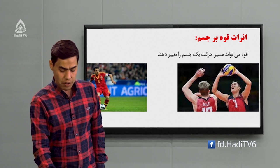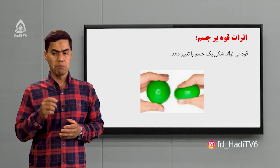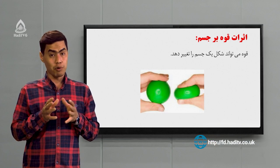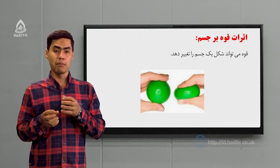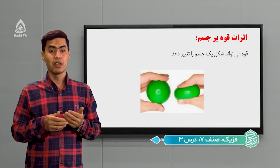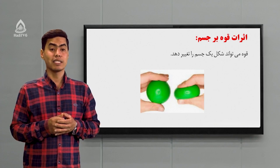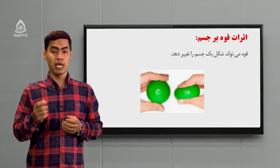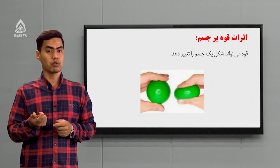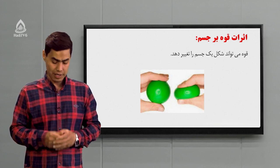تأثیر بعدی: قوه می‌تونه شکل یک جسم را تغییر بده. مثال واضح: بارها شما در خانه دیدید وقتی که مادرتان نان پختم می‌کنه، آرد تبدیل به خمیر می‌کنه، این خمیر تغییر شکل می‌ده تا به شکل نان دربیاد. این اثرات قوه بر جسم بود، اینها رو با هم مرور کردیم و مثال هم زدیم.